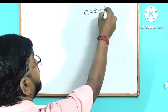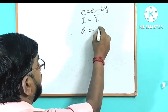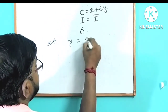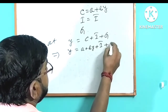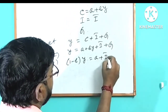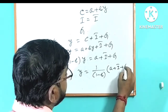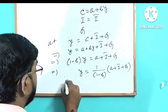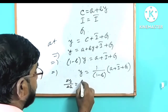Consumption: A plus B times Y. Investment is constant, autonomous. Government expenditure is also autonomous. Which gives us A plus B Y plus I bar plus G, which is also equal to A plus B Y, that is: a plus i-bar plus g.